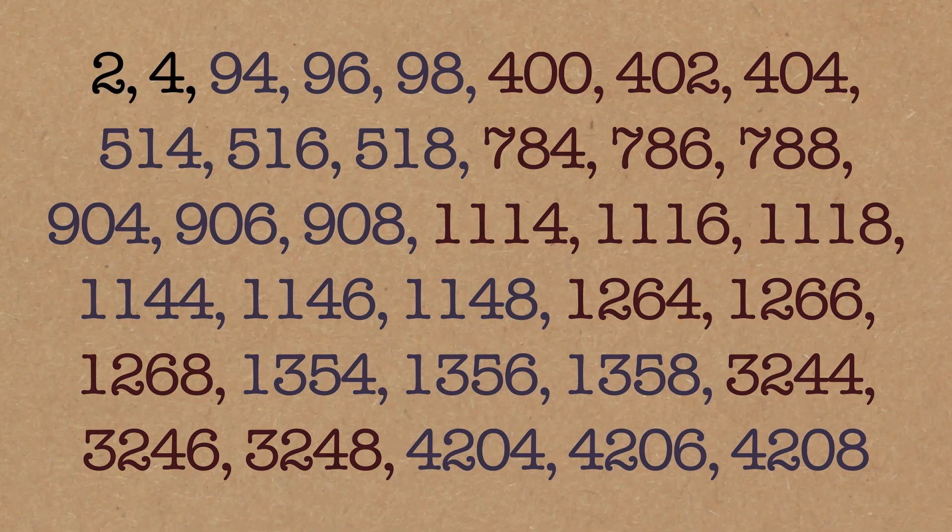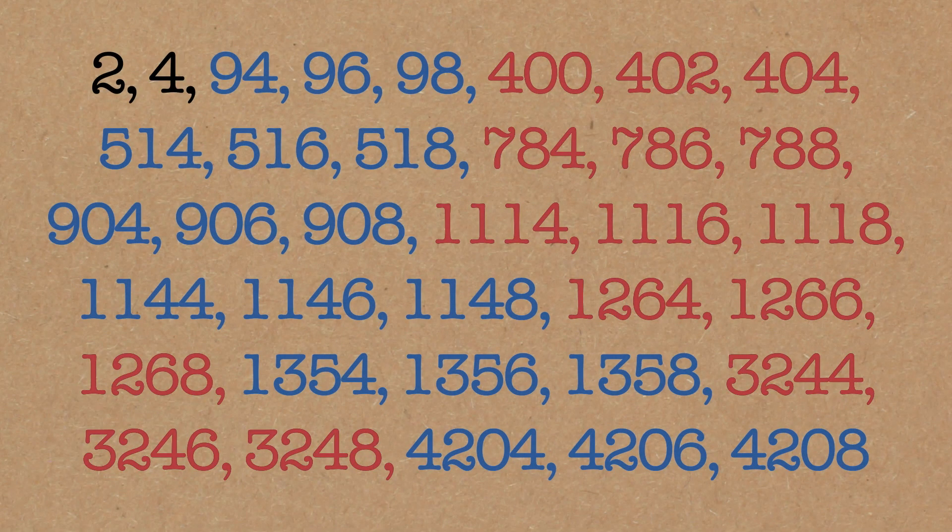So, I don't know if you noticed when you looked at these exceptions, but they come in triples. Look, you've got the 2 and the 4 to start with, but that's kind of because they're small, you can't make them, fine.